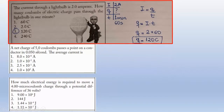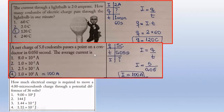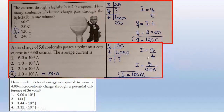Next problem: A net charge of 5 Coulombs passes a point on a conductor in 0.05 seconds. What is the average current? Data: Q = 5 C, T = 0.05 s, find I. Using the formula I = Q/T, substituting gives I = 5 / 0.05 = 100 amps.